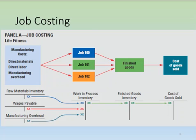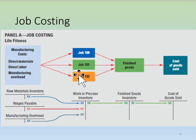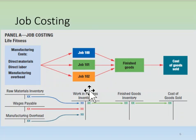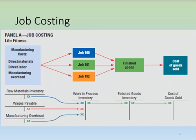Job order costing is used to determine the cost of producing unique goods in relatively small batches. This also applies to service companies like law firms and hospitals, which use job order costing to determine the cost of servicing individual clients. In job costing, direct materials, direct labor, and manufacturing overhead are posted into individual job records. The total cost of all job records represents work in process inventory, and when units are completed, costs move into finished goods inventory, then ultimately into cost of goods sold.